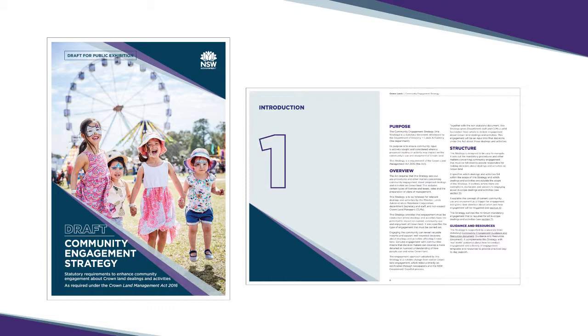A draft community engagement strategy has been developed and is now on public exhibition. The new strategy will support transparent and appropriate engagement with communities to develop a better understanding of how people use and value Crown land when making decisions. The community engagement strategy will be used by the people responsible for managing Crown land under the new Crown Land Management Act 2016. One important exception is local councils — councils will not be required to comply with this strategy, as they will be required to comply with the Local Government Act 1993 when managing Crown land.